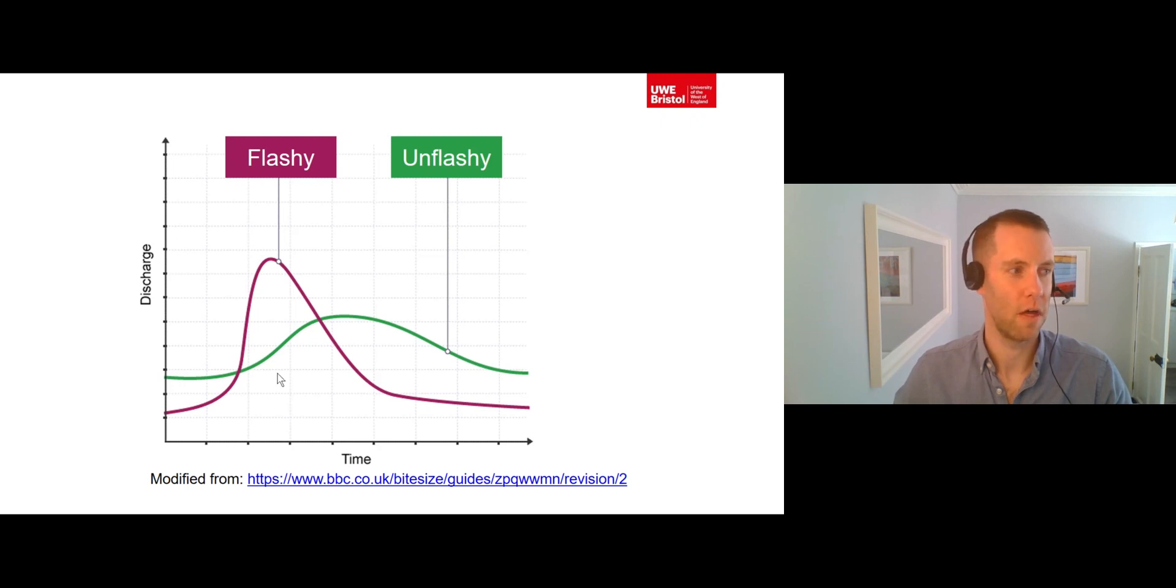Conversely, hydrographs with long lag times, gradual rising limbs and low peak discharges have low levels of storm flow and high levels of base flow and are known as unflashy or unresponsive catchments. The differences in the shape of storm hydrographs are caused by the same physical and human factors that cause differences in the flow regimes of catchments. These will be explored in lectures 4 and 5.